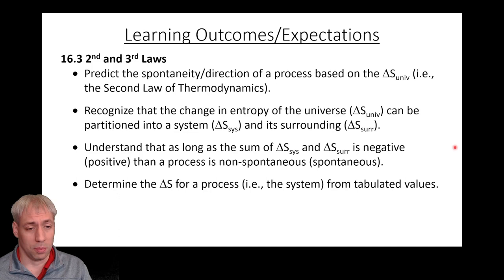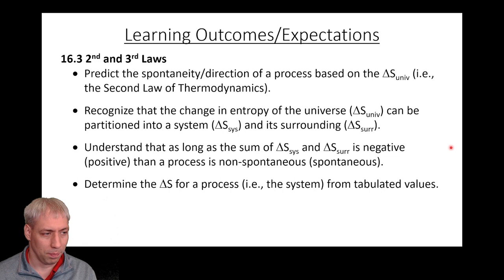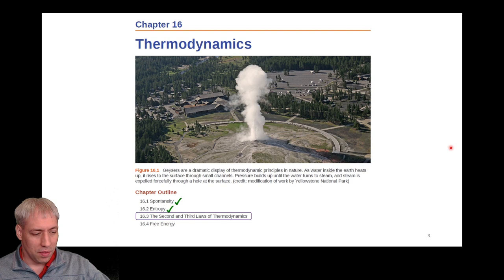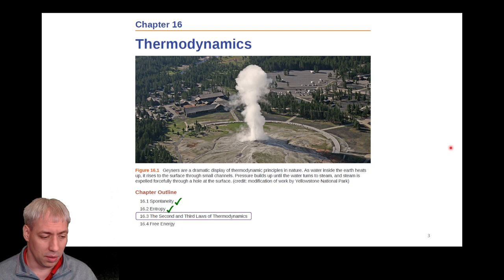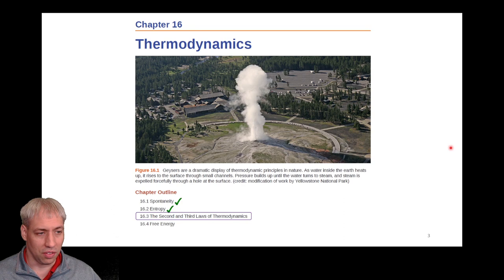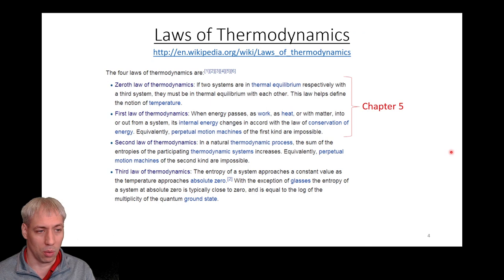In 16.3 we're going to start to dive into the second and third laws of thermodynamics. In chapter 16 we've gone on this journey from defining spontaneity and non-spontaneity — will it happen or not? We discovered that enthalpy is not enough to make that prediction; we need another term called entropy, which is thought of as the order or disorder in the system. Now in 16.3 we're going to get to the heart of thermodynamics and why it's so useful in making predictions about whether things will happen.